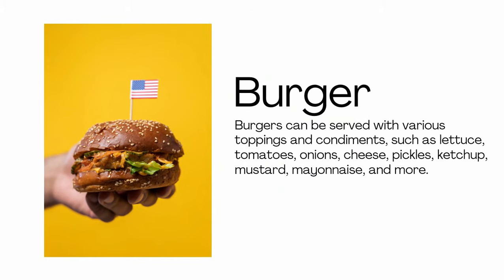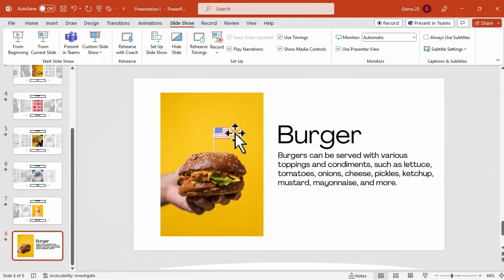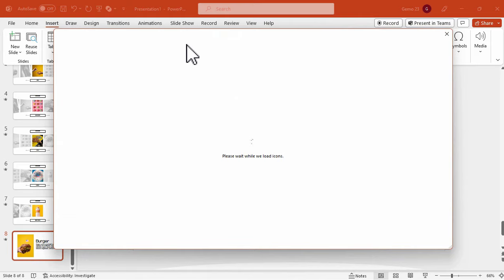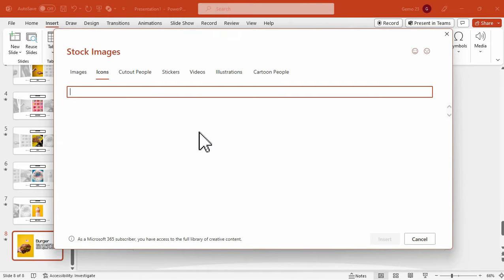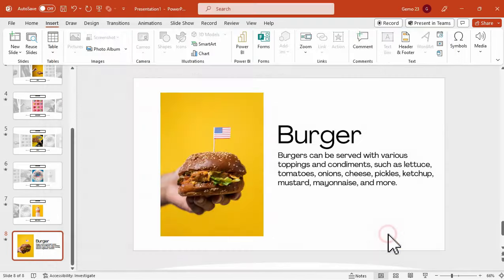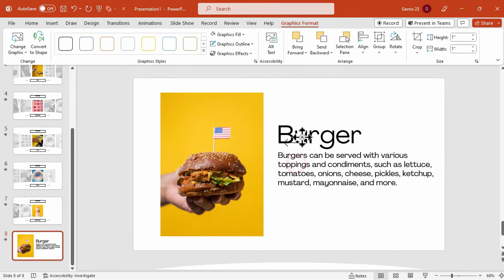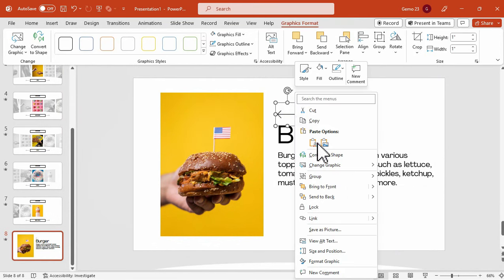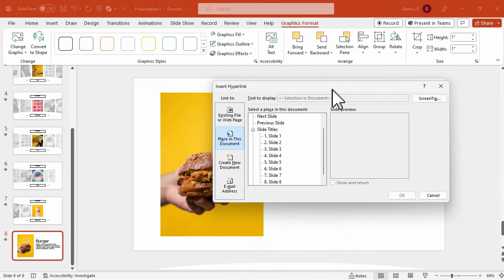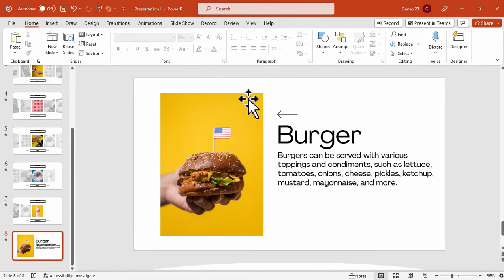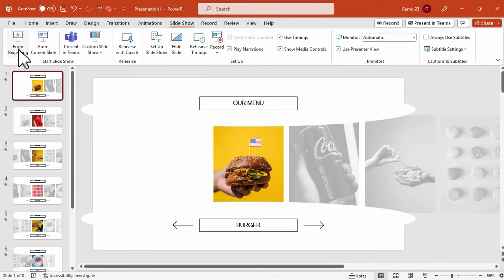The problem here is that we don't have the option to go back to the carousel slide. However, to return to the carousel slide effect, we need to add an arrow icon. Insert the arrow icon and position it accordingly. Now apply a hyperlink function to this icon, linking it back to slide 1. This will enable clicking on the arrow icon to return to the carousel slide effect.